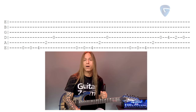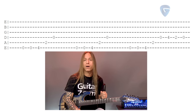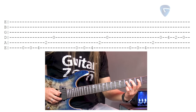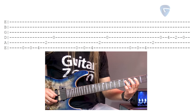Then we get to the third part of this, which is 0, 0, 4, 2, 0 — just like before. But then we've got a tag at the end: 4, 2, 0 on the 4th string. So at the end I've got to play 4, 2, 0 on the 4th string.